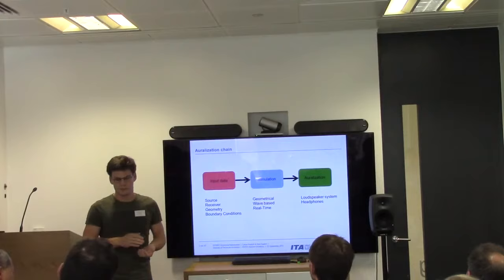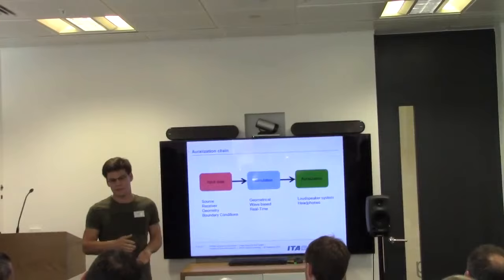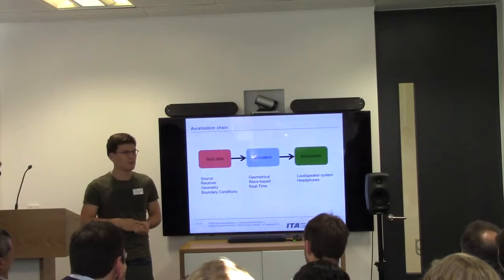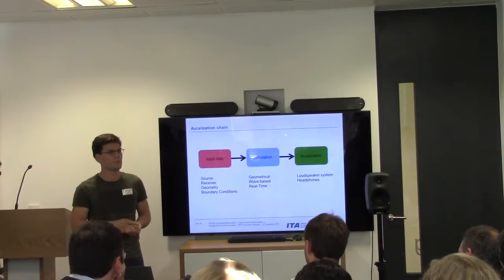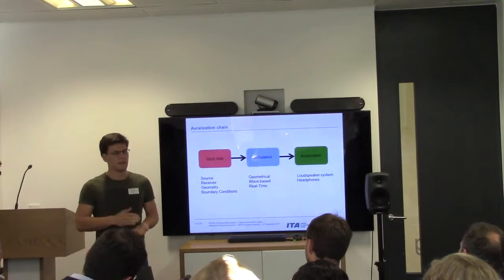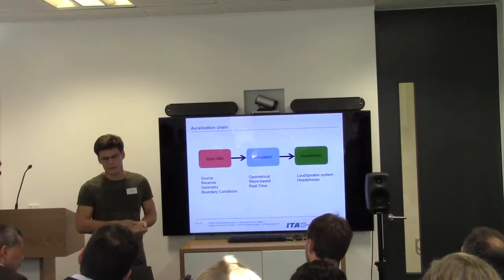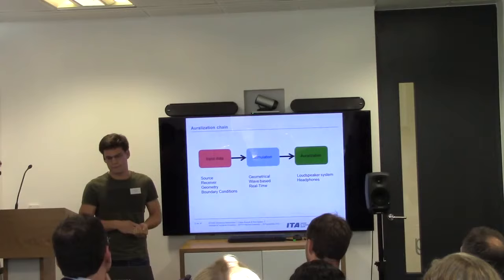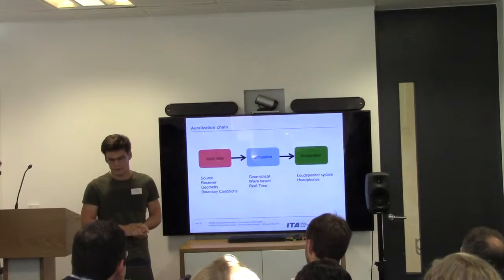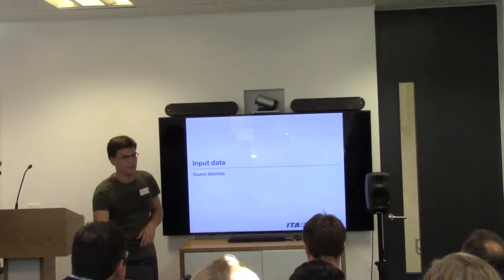The auralization chain begins with input data. You can have a really good simulation in the middle, but if your input data is wrong, you can do a perfect simulation and it still won't represent the original scene you are trying to auralize. Input data requires the source, receiver, room geometry, and boundary conditions — basically the material definitions. For simulations, you have many options: geometrical or wave-based, offline or real-time, with or without user interaction. For auralization, options include headphones, loudspeakers, VBAP, higher-order ambisonics, or wave-field synthesis.